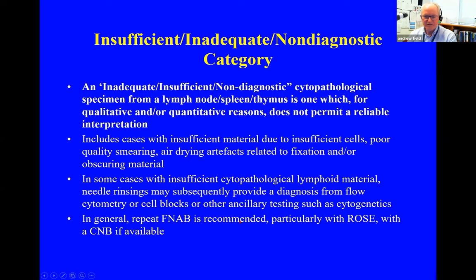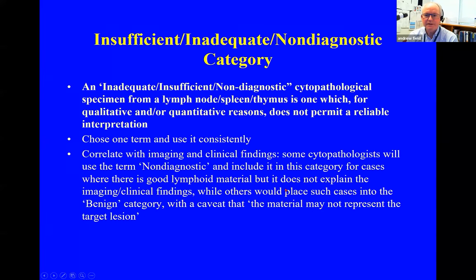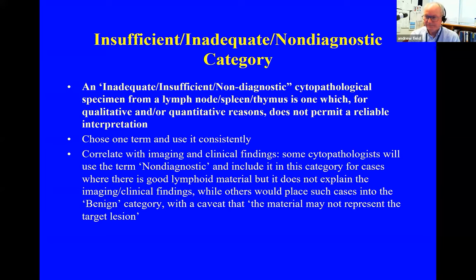In general, repeat fine needle biopsies are recommended, particularly with rapid on-site evaluation, and core needle biopsies may be required. Each department should choose one term and use it consistently. The recommendation is to correlate with imaging and clinical findings. Some cytopathologists use the term 'non-diagnostic' for cases where there's good lymphoid material but it doesn't explain the imaging or clinical findings; others place such cases in the benign category with a caveat that the material may not represent the target lesion. The reporting system currently accepts both positions, but you should choose one term and stick to it.